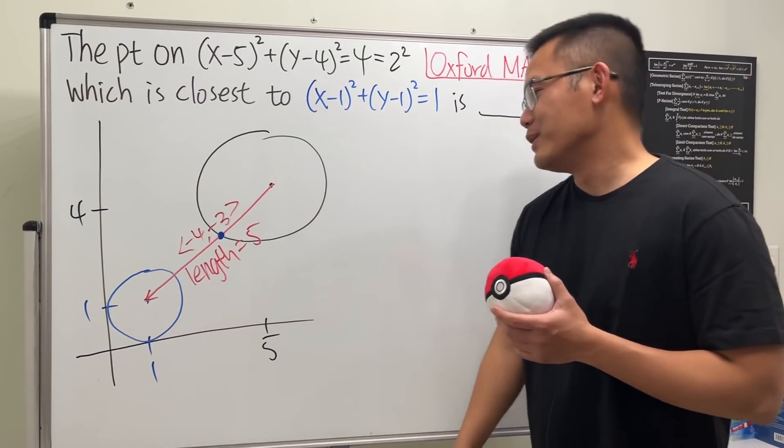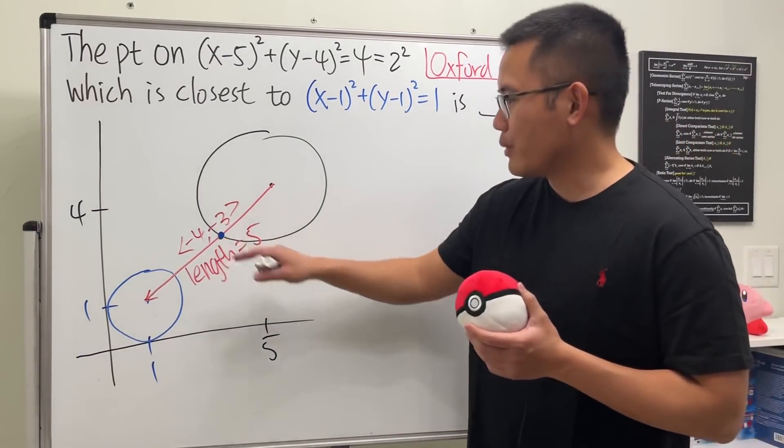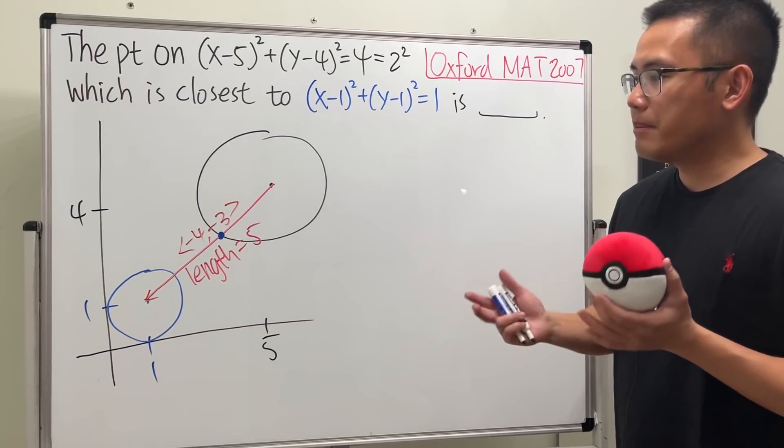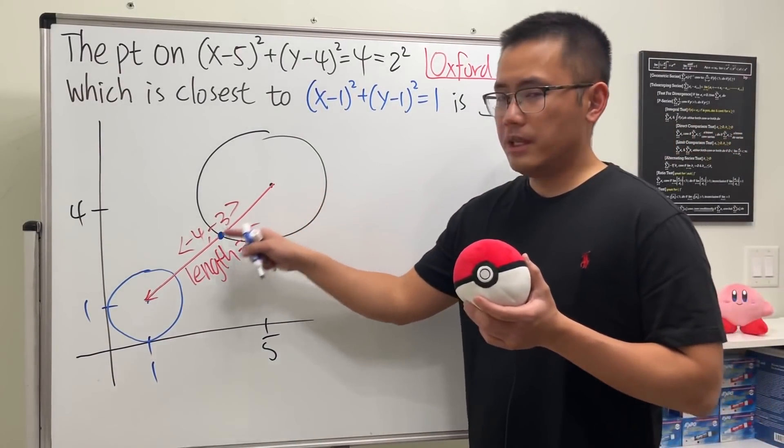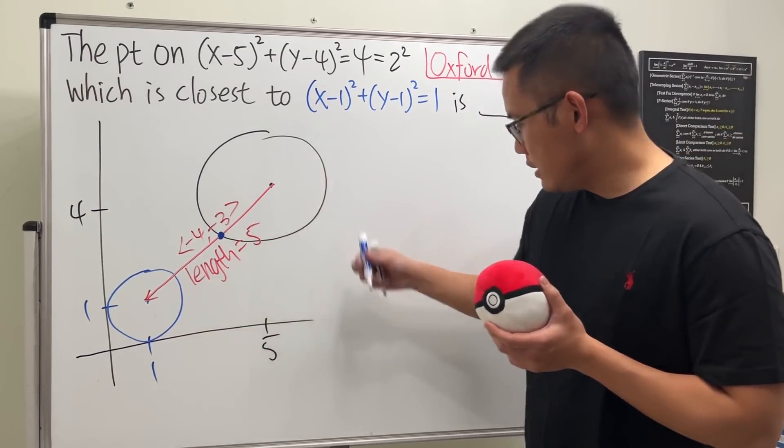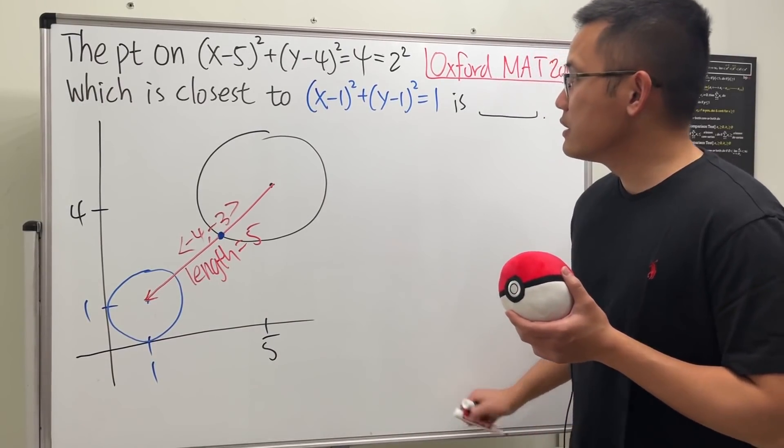Leave a comment down below if you have any geometric reasoning for that. So we just have to find out that point, and it's actually not bad now. Why? Because you know that's the direction, and the coordinate here is (5,4).